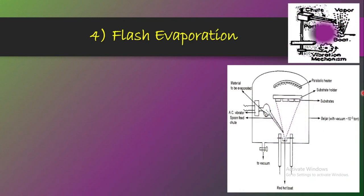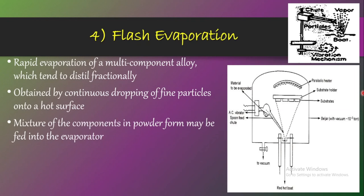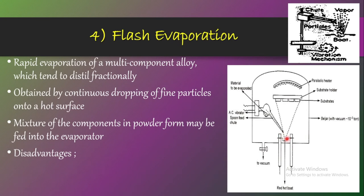The next approach is flash evaporation. Here, rapid evaporation of a multi-component alloy or compound — which tends to distill fractionally — is obtained by continuously dropping fine particles of the material onto a hot surface. Alternatively, a mixture of components in powder form may be fed into the evaporator. Fine particles are supplied onto the crucible, distilled fractionally, and simultaneously evaporated, finally condensing over the substrate to form the thin film.